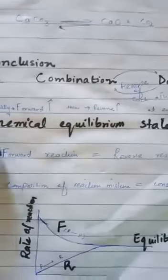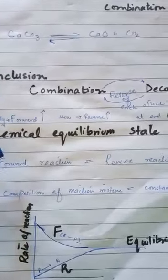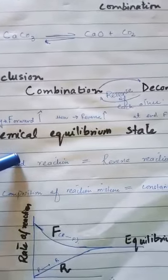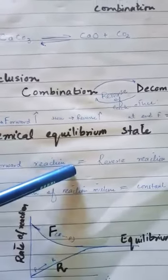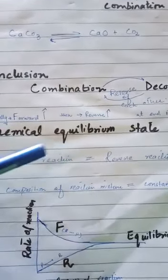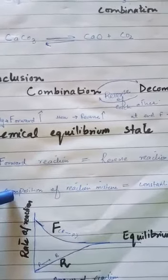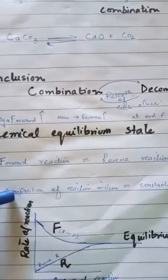There are two key conditions for the chemical equilibrium state. First, the rate of the forward reaction is equal to the rate of the reverse reaction. Second, the composition of the reaction mixture remains constant.